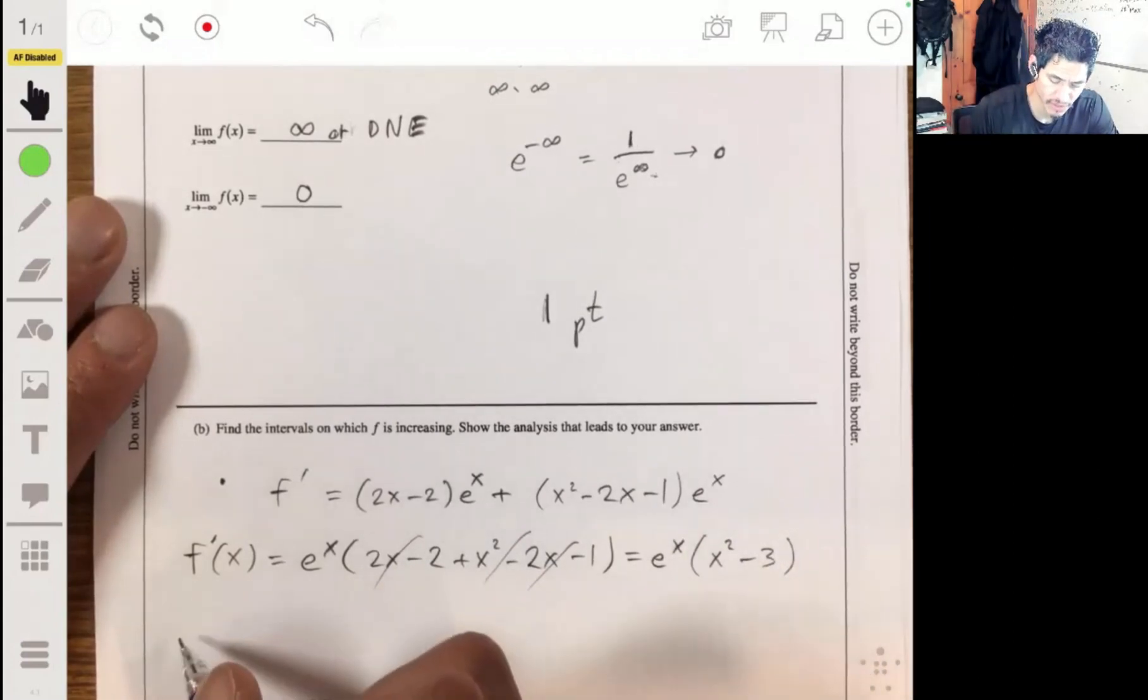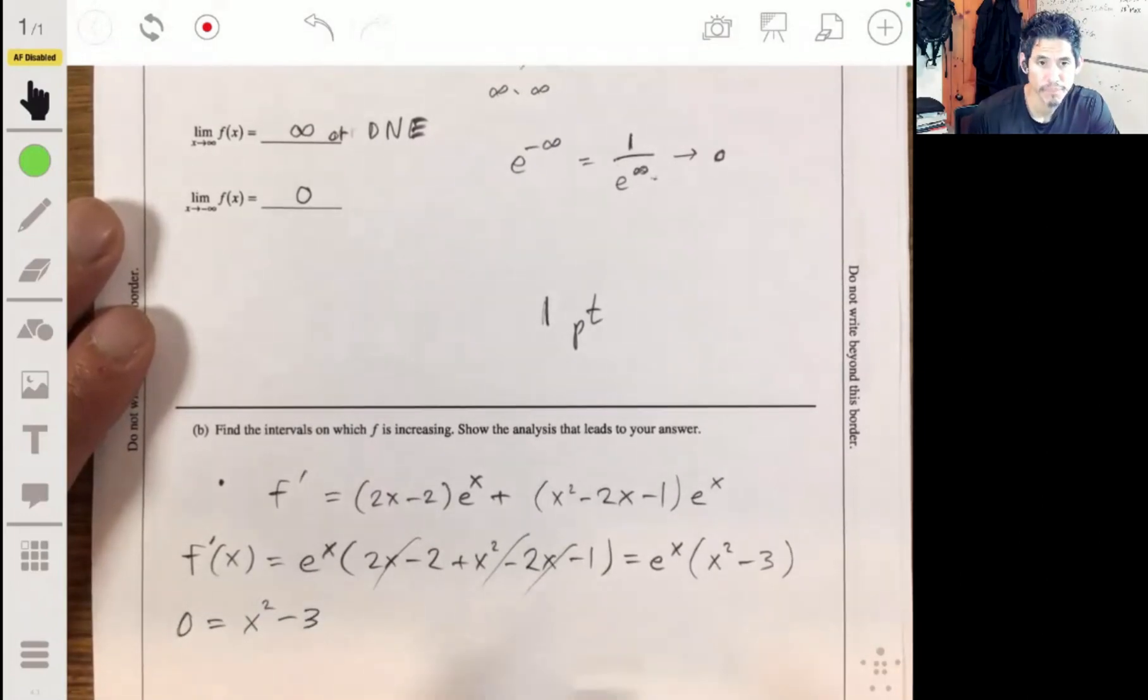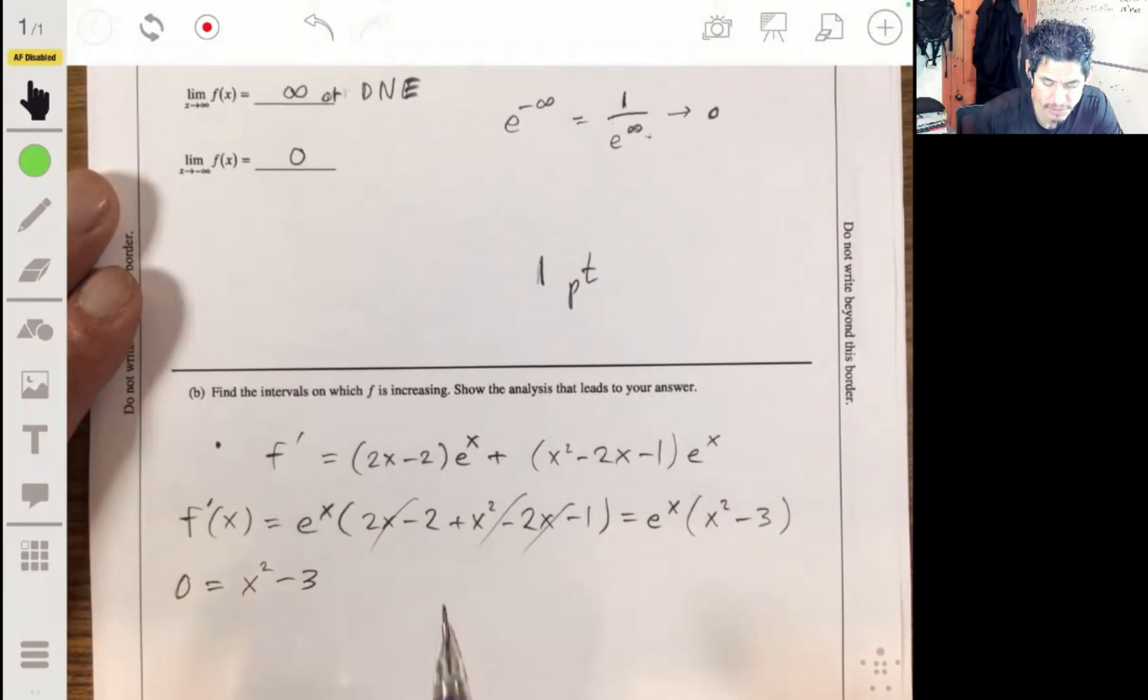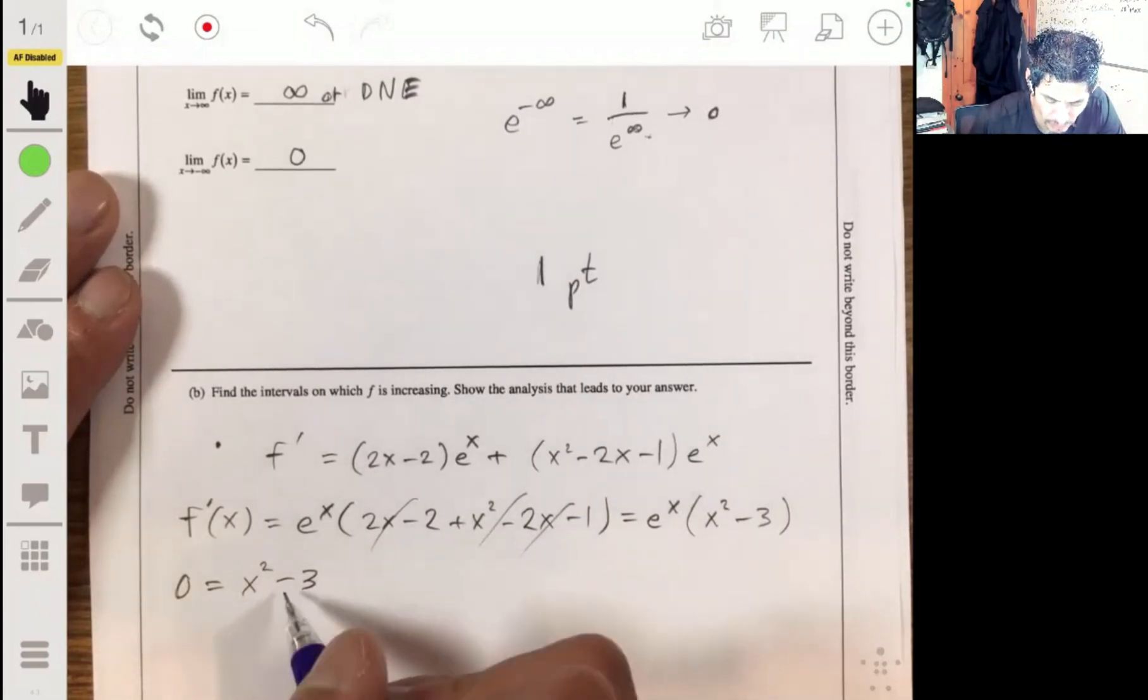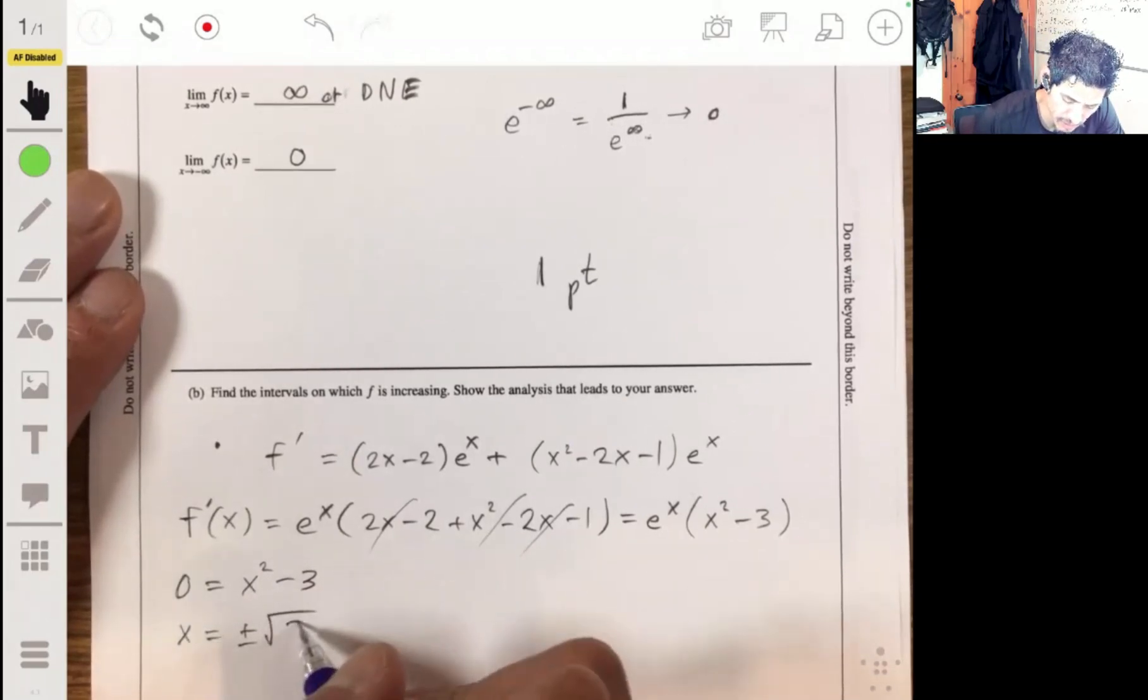So then when we set the derivative equal to 0, we're going to have 0 equal to x squared minus 3. And so possible answers can then be positive and negative square root of 3. Plus and minus square root of 3.